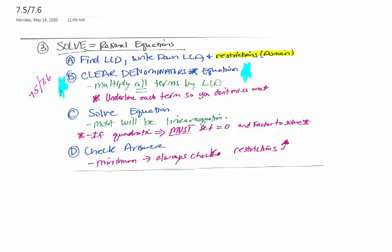We are then going to solve the resulting equation. This may be a quadratic. Most of the time it's going to be a linear equation. But if it comes out to be a quadratic, which means I have an X squared, this is 6.6. You must set everything equal to zero, factor, and solve.